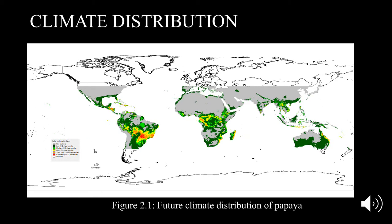Figure 2.1 represents the future climatic distribution. Just like the previous map, we can refer to the legend on the left to compare suitable climatic conditions. However, if we compare current and future climatic distribution, we can see that some areas have lost their suitability, and this can be due to various influences.